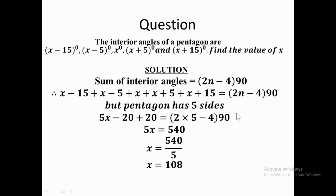Simplifying the right-hand side: 2 times 5 minus 4 times 90 gives 540. So the sum of interior angles of a pentagon is 540 degrees. Therefore, 5x equals 540. Dividing both sides by 5, x equals 108 degrees. That is the solution to the first question.